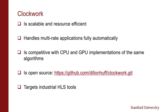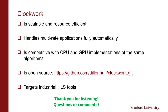In summary, Clockwork is scalable and resource efficient. It handles multi-rate applications fully automatically, is competitive with state-of-the-art stencil compilers and with CPU and GPU implementations of the same algorithms, is open source on GitHub, and targets industrial HLS tools. We hope Clockwork is a valuable contribution to the hardware compilers research community, and we'd love to hear any questions or comments.